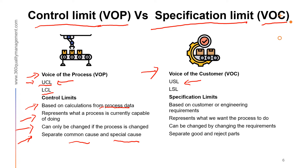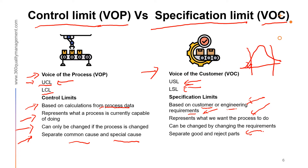The voice of the customer is represented by specification limits — the upper spec limit (USL) and lower spec limit (LSL). Specification limits are derived from customer or engineering requirements, meaning somebody assigns the specs, and they represent what we want the process to do. They can be changed if requirements change, and they are used to separate good and bad parts — anything beyond the specification limits is considered a reject.